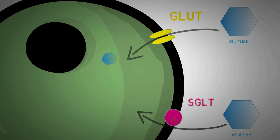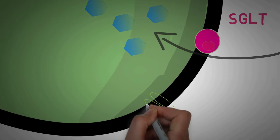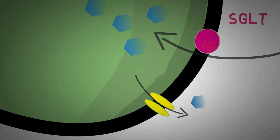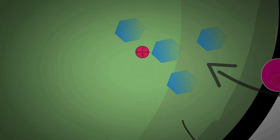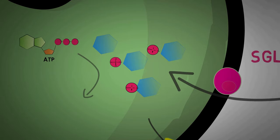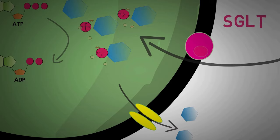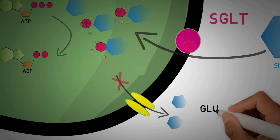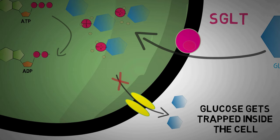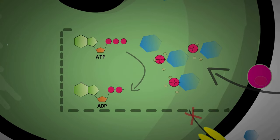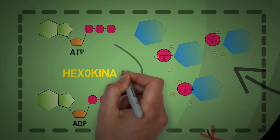So glucose is inside the cells — now what? The next step is the first step of glycolysis. Glucose which has entered our cells can easily escape outside, and to prevent this we attach a phosphate group to this glucose molecule to make glucose-6-phosphate, since a phosphate group is being attached to glucose at the 6th carbon. This phosphate is provided by ATP which gets converted to ADP. This makes the glucose molecule highly polar, and as polar molecules cannot cross the cell membrane easily, glucose gets trapped inside the cells. This step is irreversible and is performed by the enzyme hexokinase.